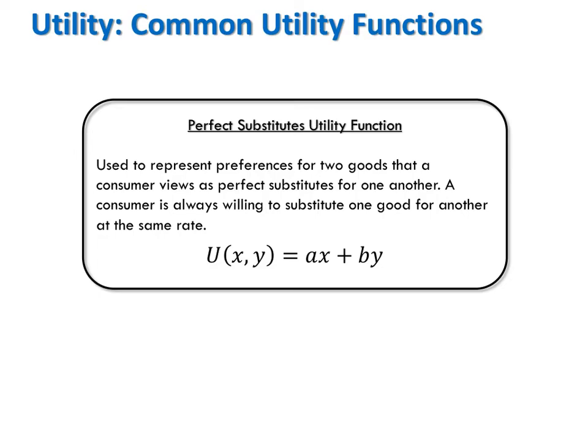Notice that both goods are raised to the power one, not any other power. What that means is that for every perfect substitute utility function, the partial derivative of the utility function with respect to each good is constant. We call the partial derivative of U with respect to x the marginal utility of good x. The marginal utility of x tells us how consuming an additional unit of x will impact utility. Here, MUx is a constant a, so for every additional x this consumer consumes, his utility goes up by the same amount a.